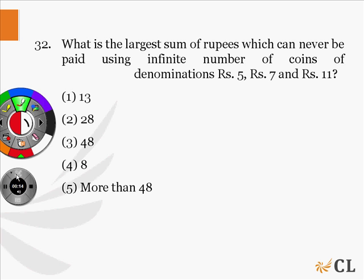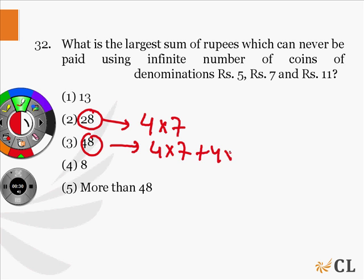Let us take option 2 first. 28 can be easily made using 4 coins of denominations 7. Now let us make 48, which can be made using 4 coins of denominations 7 plus 4 coins of denominations 5.